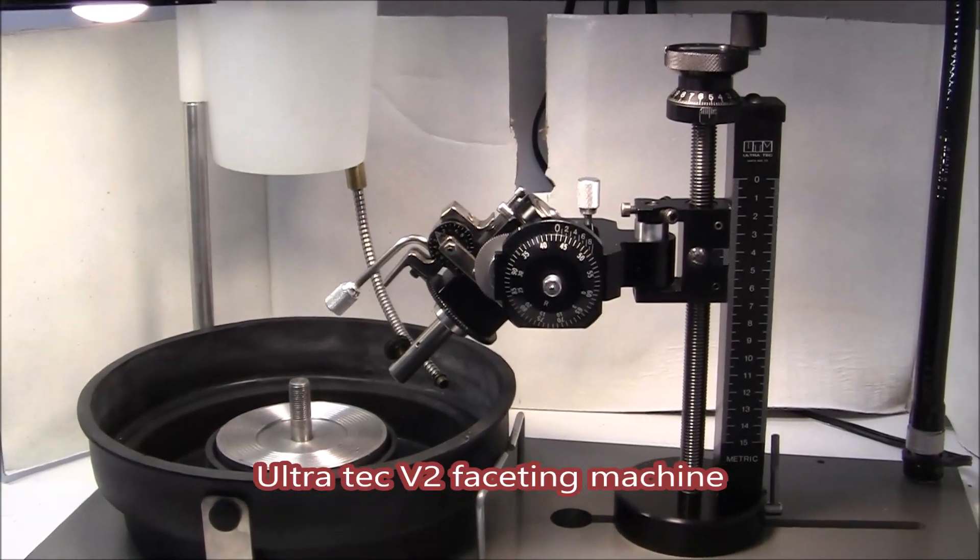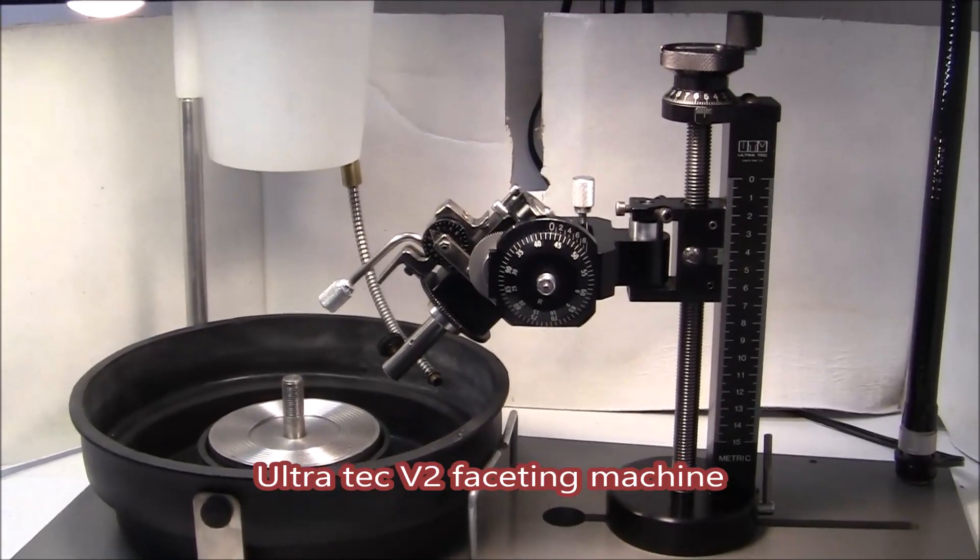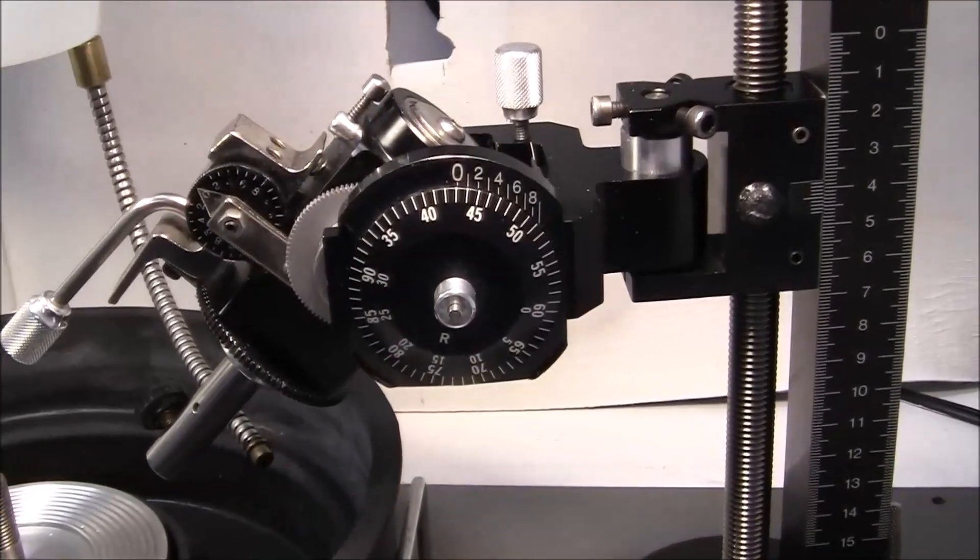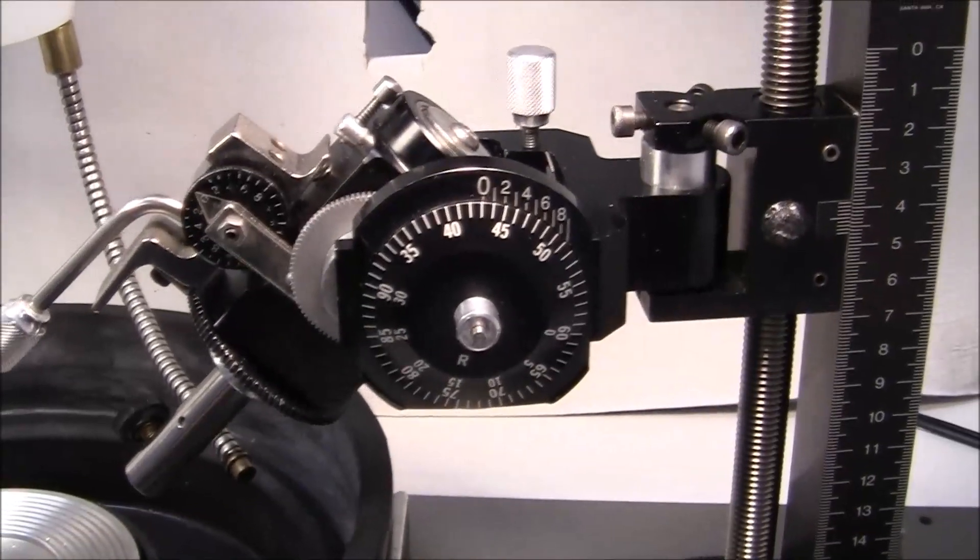This is an Ultratech V2 Faceting Machine and it's not fitted with a dial indicator down position gauge.